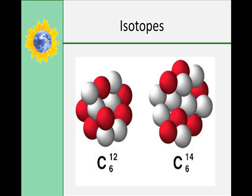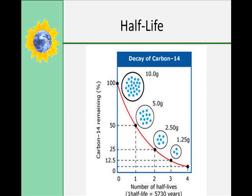Atoms decay at random, and we cannot predict when a single individual atom will decay. The rate of decay of a radioactive element is measured by its half-life — different radioactive elements have different half-lives. A half-life is the time required for half of an element's atoms in a sample to change to the decay product. In each succeeding half-life, half of the remaining atoms decay no matter how large the sample. As the element decays, fewer radioactive atoms remain and more decay products accumulate. The higher the ratio of decay product to radioactive element, the older the sample is.